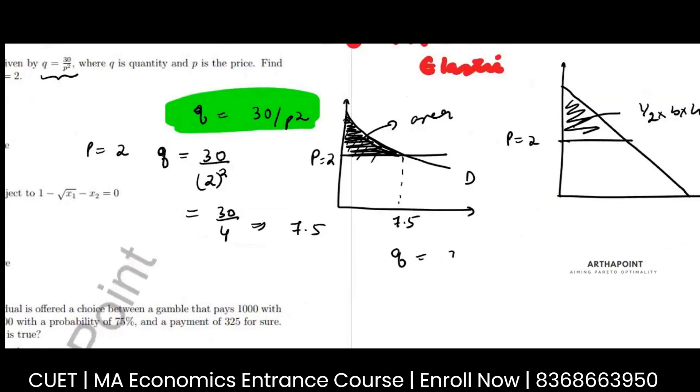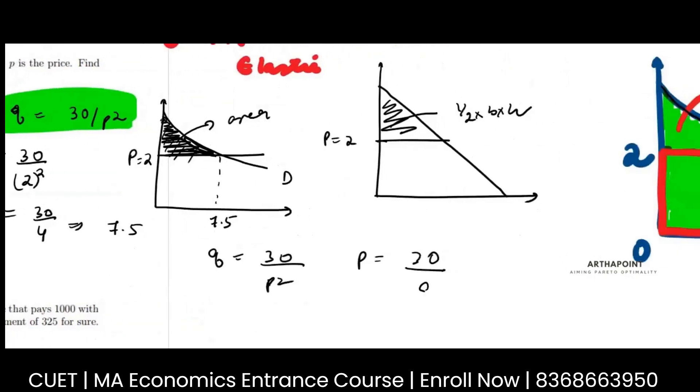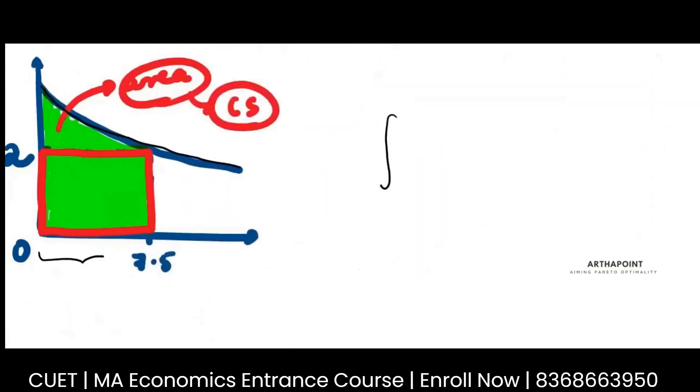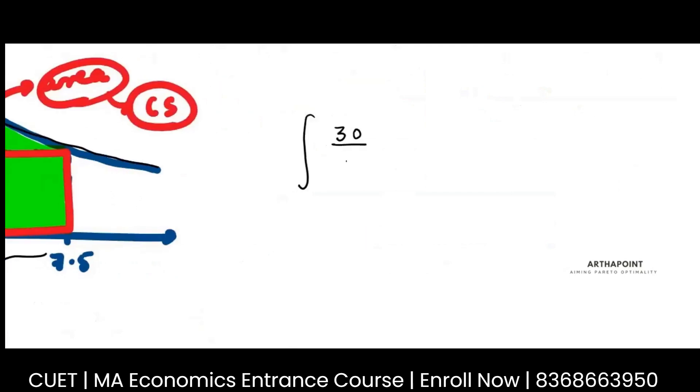demand curve is given by this. Q is equal to 30 by P squared. So which means P is 30 by Q under root. Because I have to integrate in terms of quantity from 0 to 7.5.